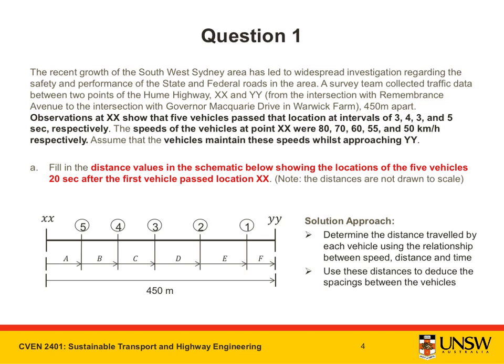Let's now take a closer look at Part A. We are given a schematic diagram showing the locations of XX and YY and need to determine where the vehicles are 20 seconds after the first vehicle passes location XX.